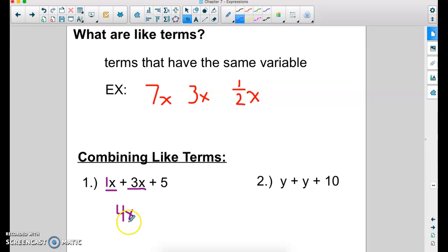Can we add the 5 to the 4x? No, because 5 does not have an x with it. So they are not like terms. 5 is called a constant. So we leave it on the side. And now my expression is simplified. These two expressions are equivalent to one another.